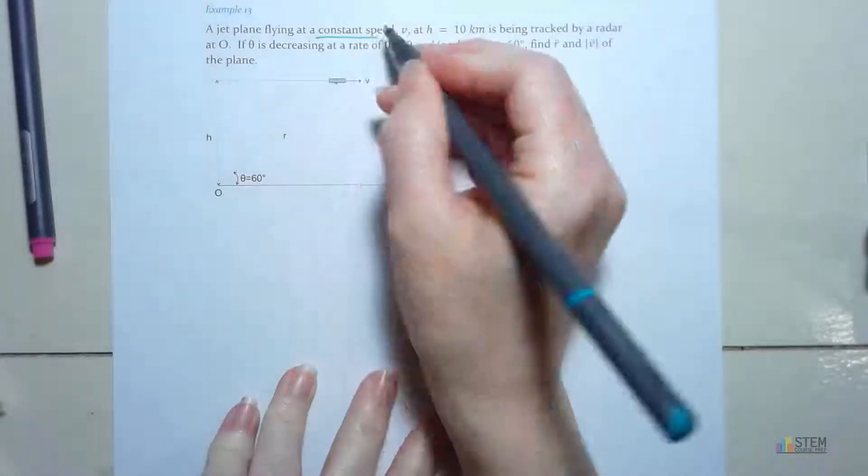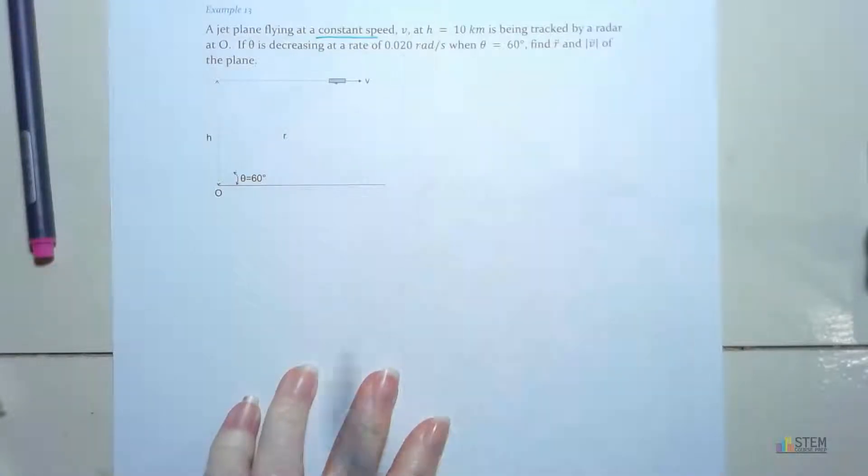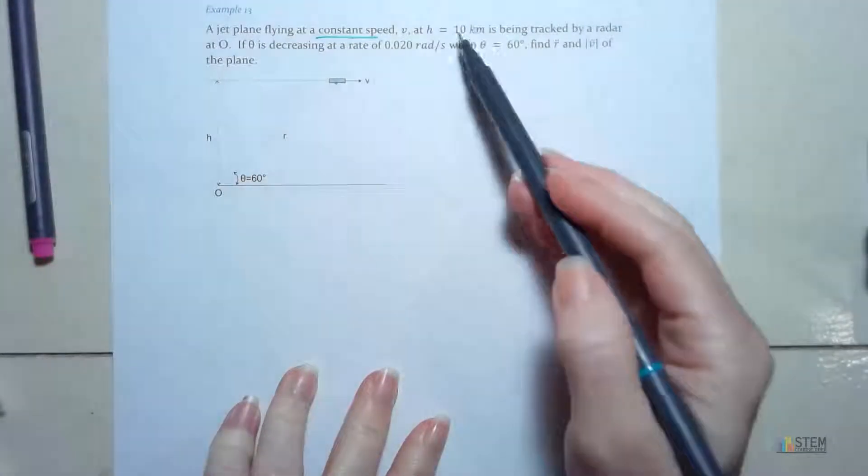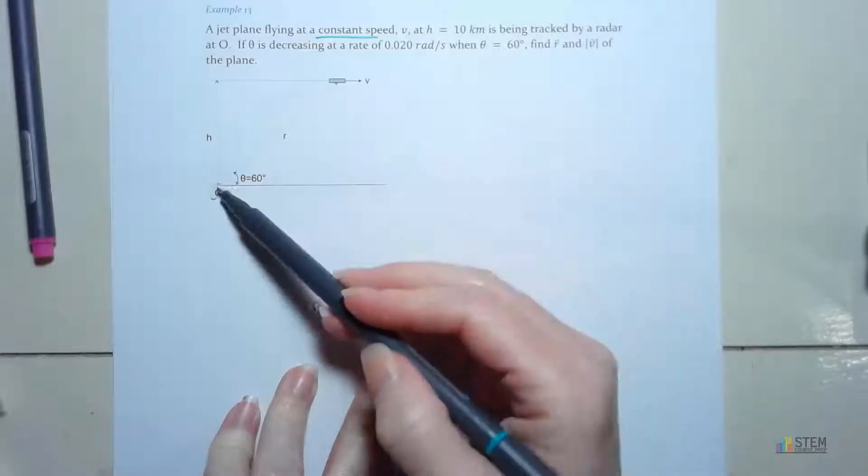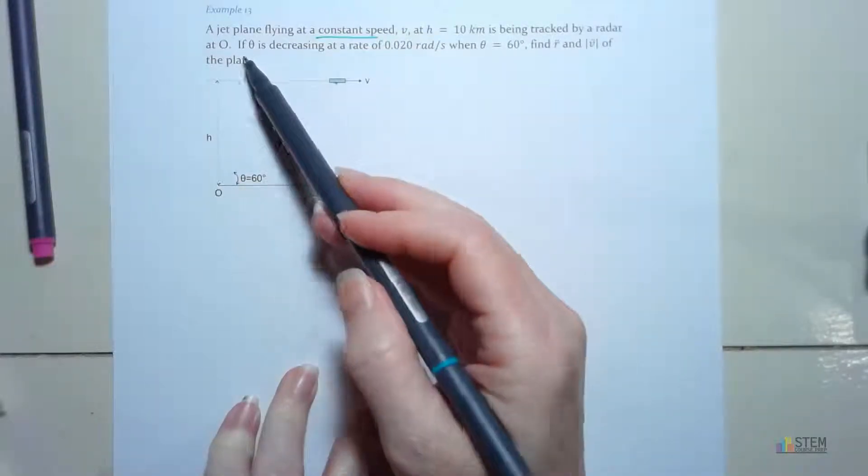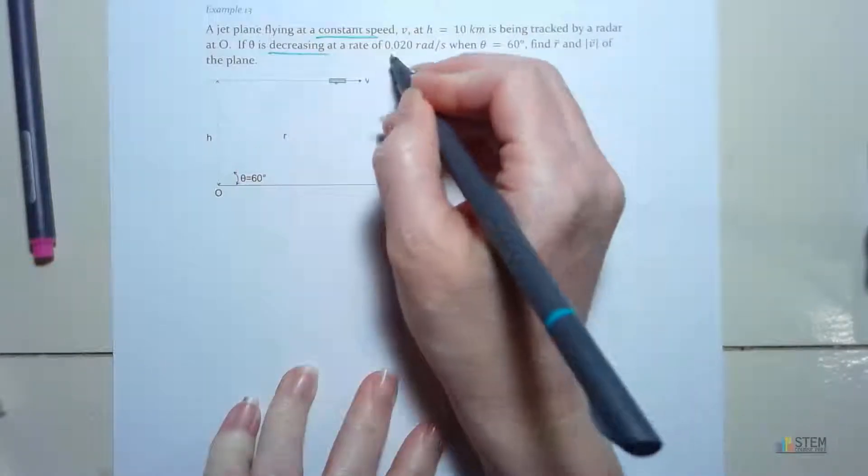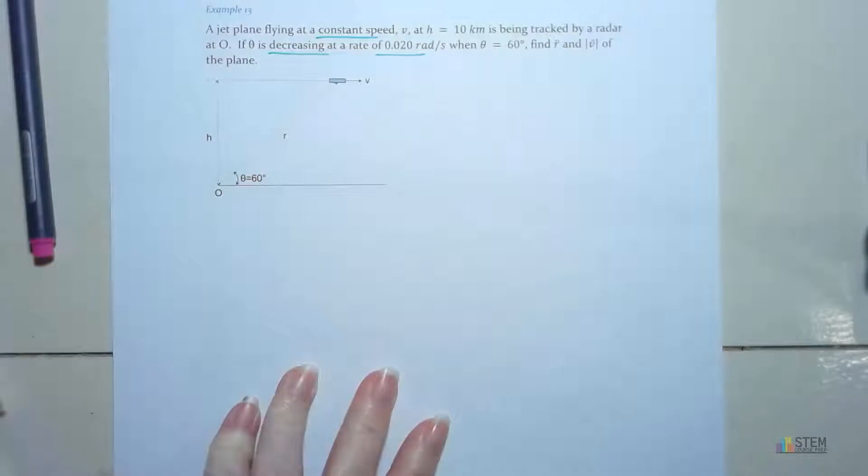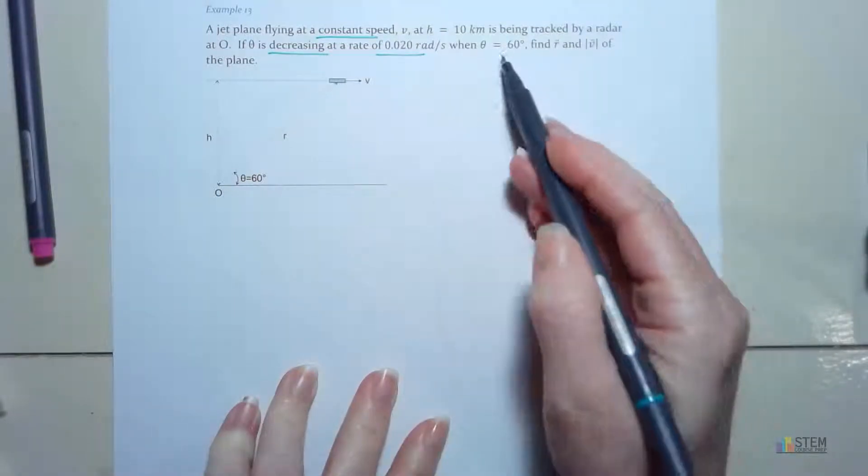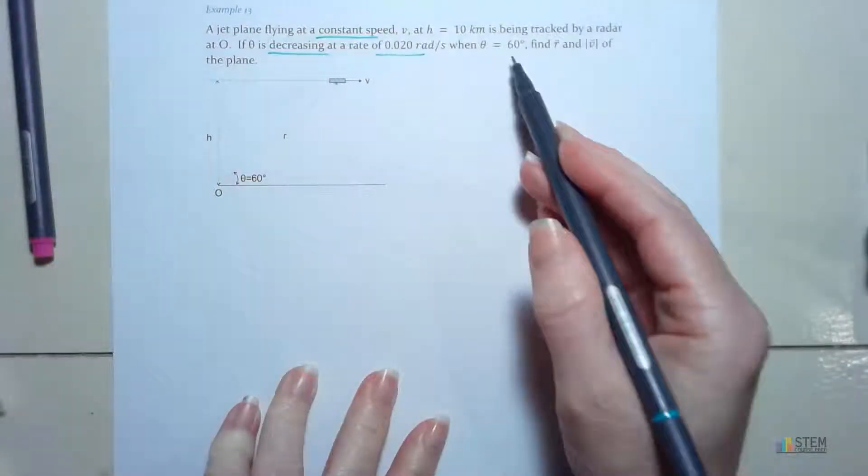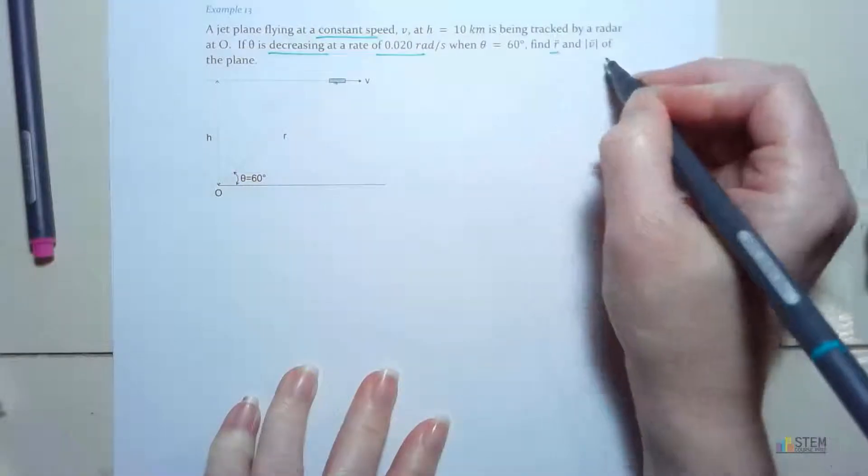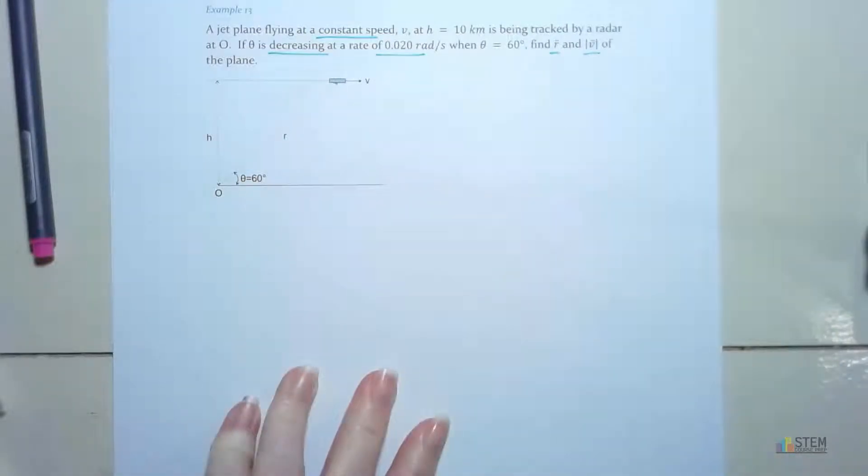Let's highlight that. So constant speed, we've got a V here. Now we're at a height of 10 kilometers, and we're being tracked by a radar here on the ground at O. Now if theta, which is this angle right here, is decreasing at a rate of 0.02 radians per second, when theta is 60 degrees, we want to find R double dot and the magnitude of the velocity vector of the plane. Alright, so that's what we're going to do.